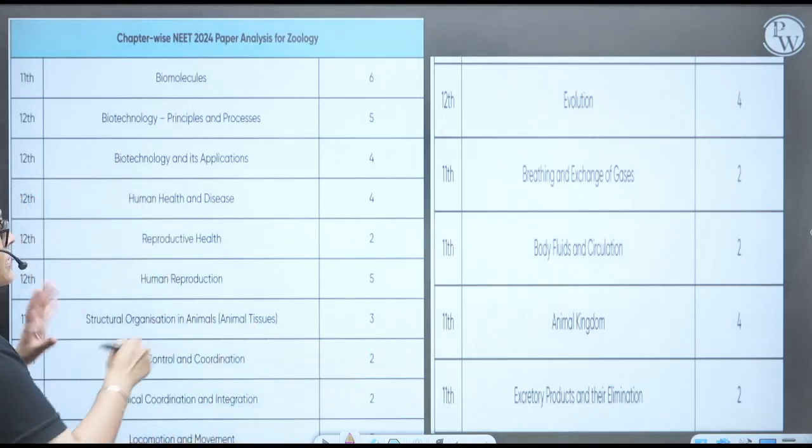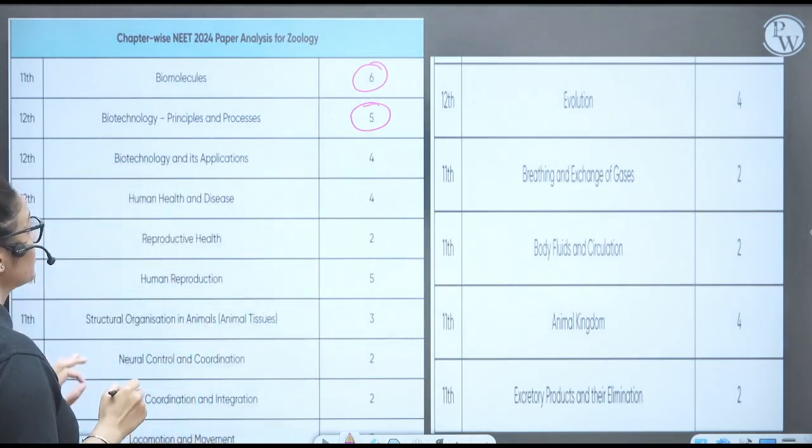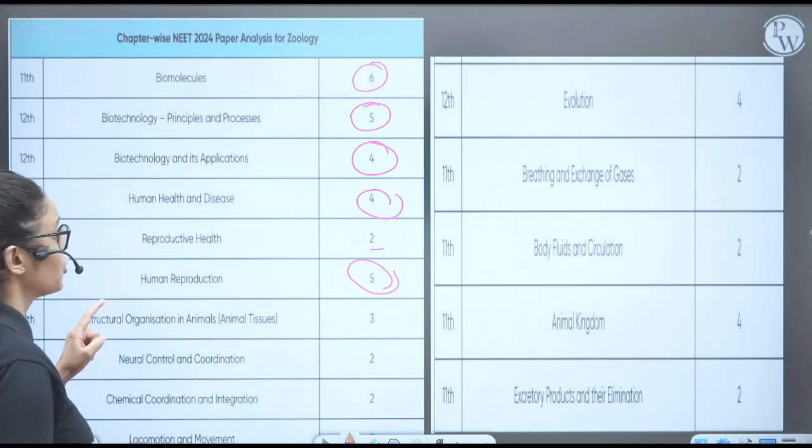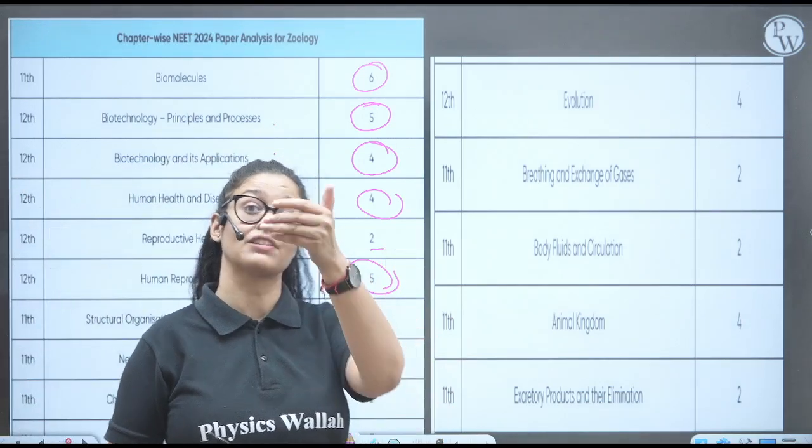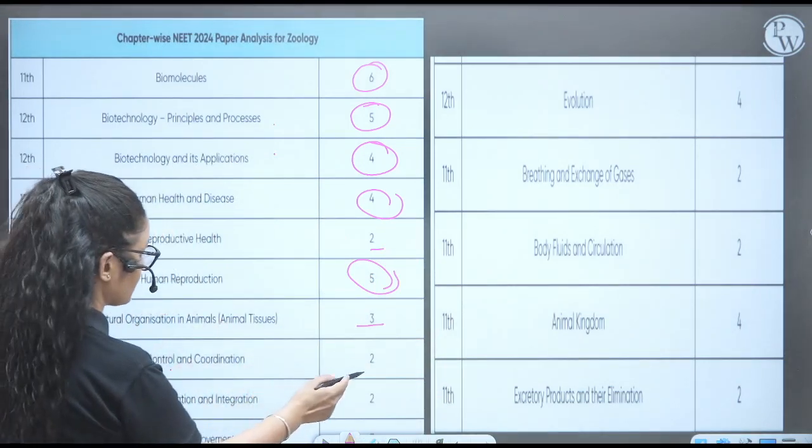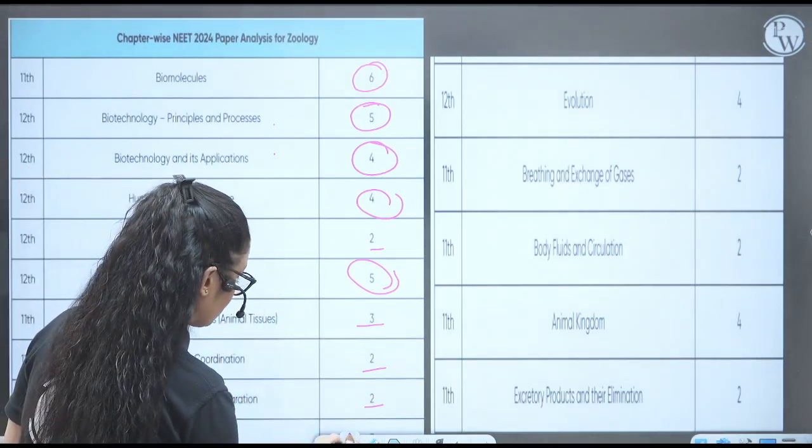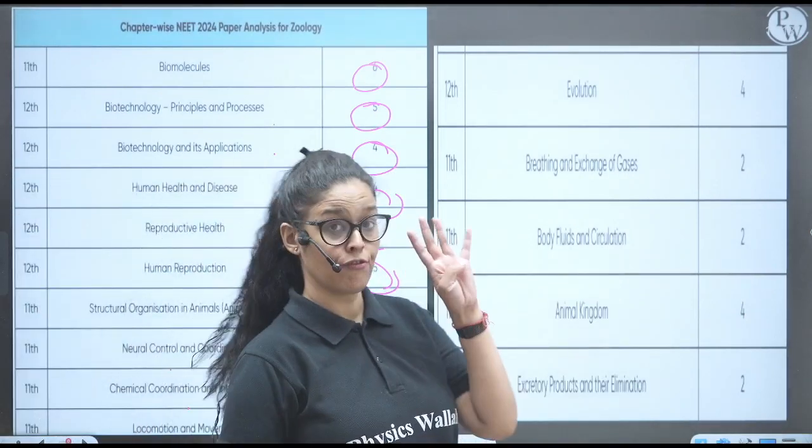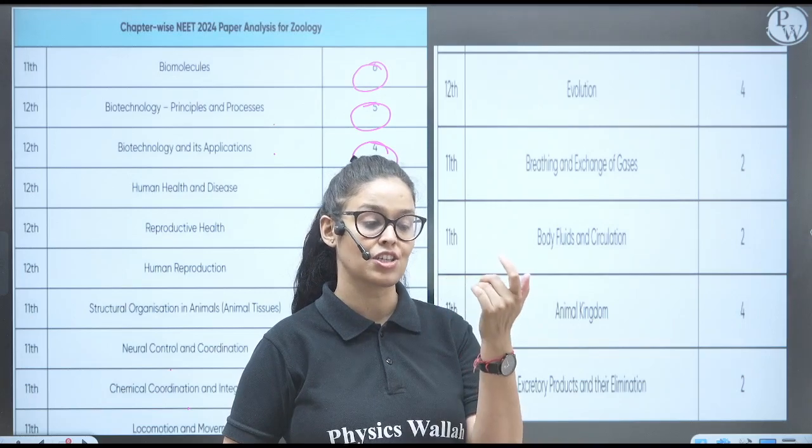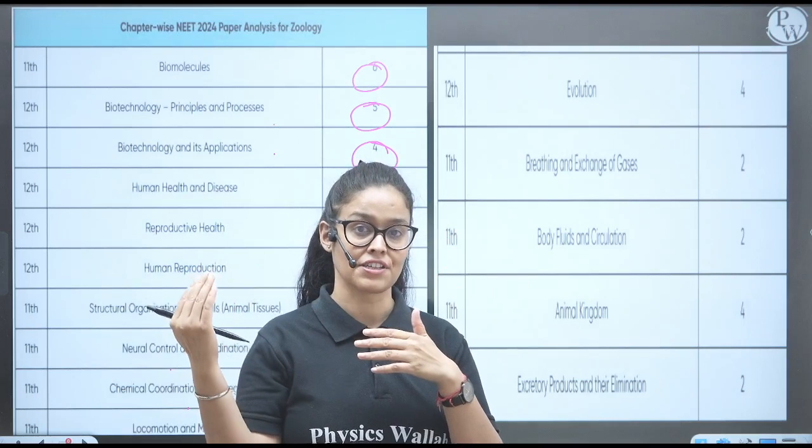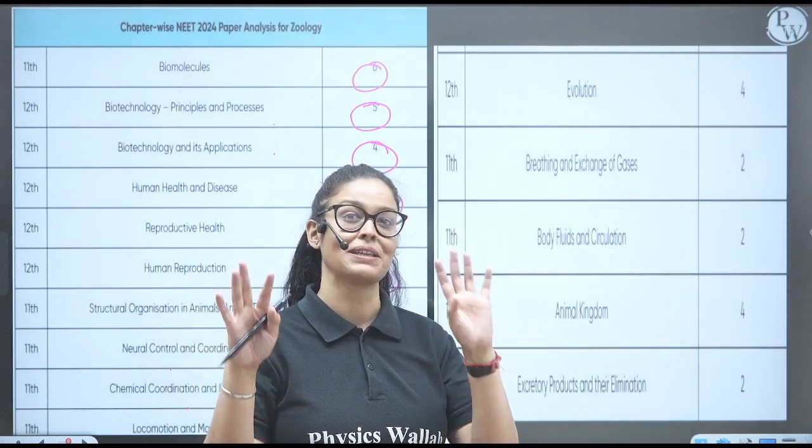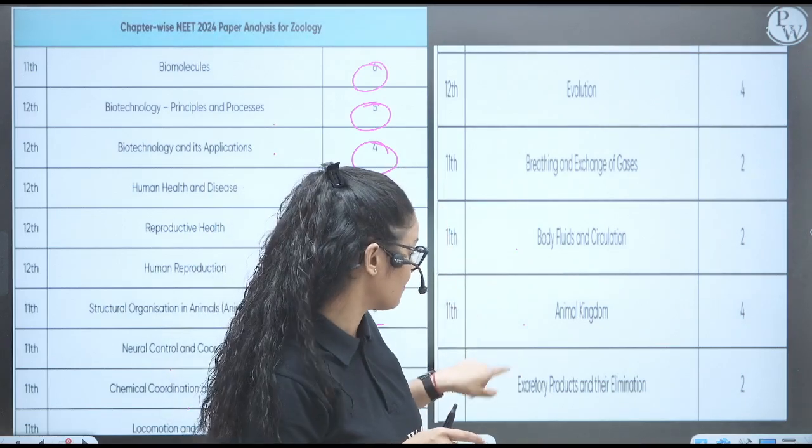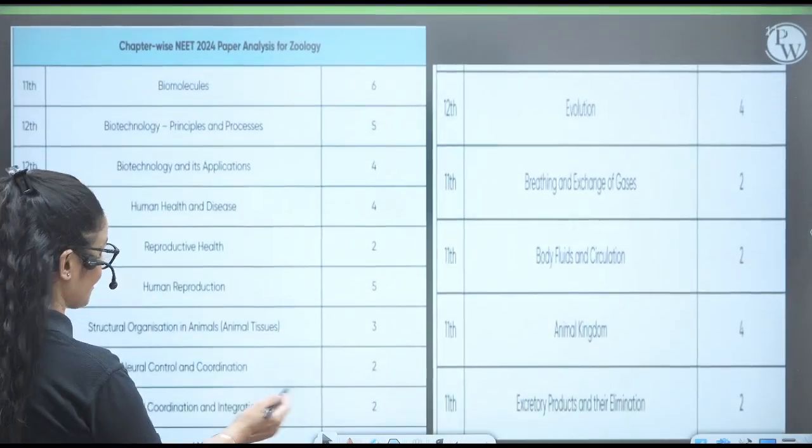Now let's see the zoology. So biotechnology principles and processes - biomolecules - six questions. Biotechnology principles and processes - five. Biotechnology and its application - four questions. Human health and diseases - four. Reproductive health - two. Oh see, like this chapter also have good weightage. So means biotechnology, human health, human reproduction - they have very good weightage, no? Structural organization in animal tissue - three questions. Neural control coordination - two questions. Chemical coordination integration - two questions. And from locomotion and movement they have asked three questions. From evolution - four questions. So from that ecology and genetics, they have asked six from the whole unit. From genetics and evolution they have asked six questions from molecular basis, six questions from the principles basis, and four questions from evolution alone. So see, evolution has good weightage this time. Breathing and exchange - two questions. Body fluid - two. Animal kingdom - four questions. Excretory elimination - two questions. So you can see the weightage of zoology of different chapters, no?